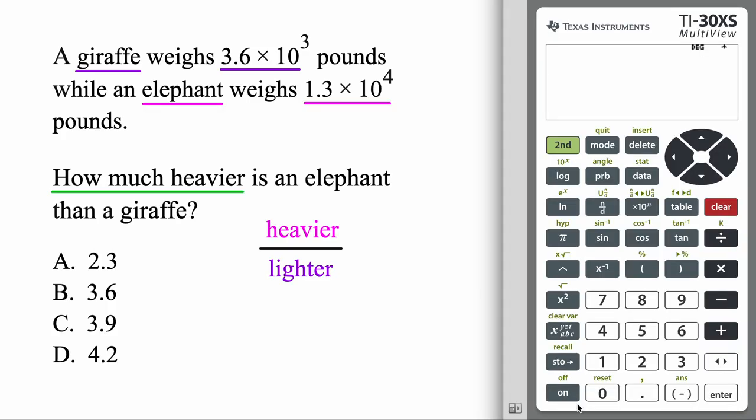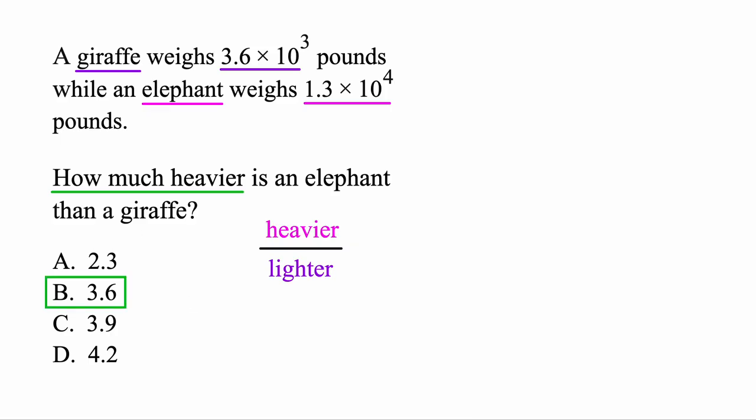Okay, let's go ahead and type this in. We're going to start with this N over D button, a fraction. It's an easy way to divide two things. Okay, the heavier thing, 1.3 times 10 to the power of 4. We'll put the elephant's weight up top. Then we'll hit the down arrow and divide by the giraffe's weight. 3.6 times 10 to the power of 3. And enter. 3.611. Closest answer is B. So let's highlight that. Therefore the elephant, the heavier thing, is 3.6 times heavier than the giraffe or the lighter thing there.